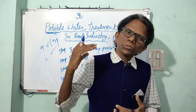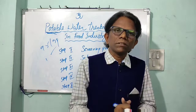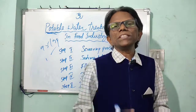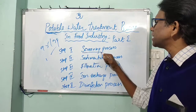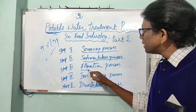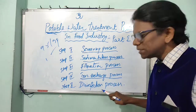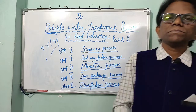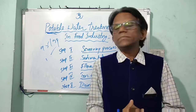We should know the basic knowledge about water and the mineral contents present in it. Portable water treatment process in the food industry has mainly five stages: the first is the screening process, the second is sedimentation, the third is filtration, the fourth is ion exchange, and the fifth is disinfection. If our water source is surface water, then screening plays a crucial role.